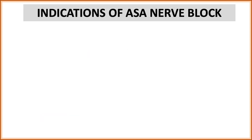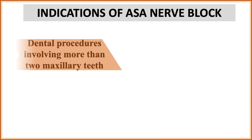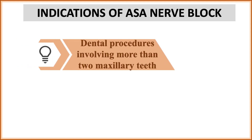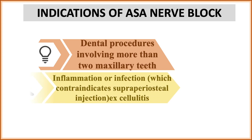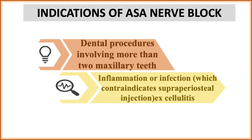The indications of the anterior superior alveolar nerve block: first, in any dental procedure in the maxilla where more than one tooth is involved, a nerve block is preferred over local infiltration. With local infiltration, you infiltrate anesthesia around each individual tooth, meaning the total volume of anesthetic given is greater. Therefore, we prefer the ASA nerve block. Second indication is in cases of inflammation or infection where local infiltration or supraperiosteal injection is contraindicated — for example, cellulitis.